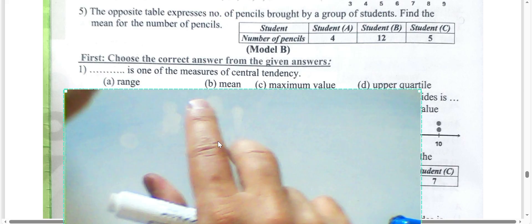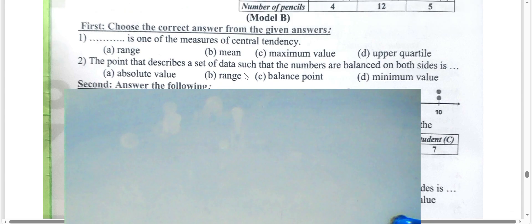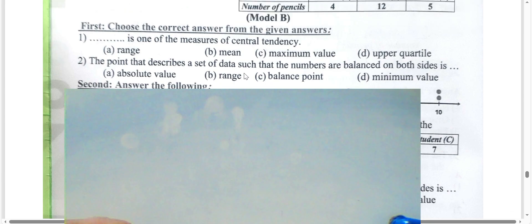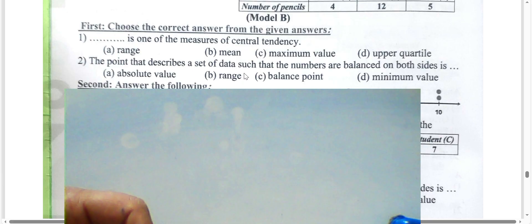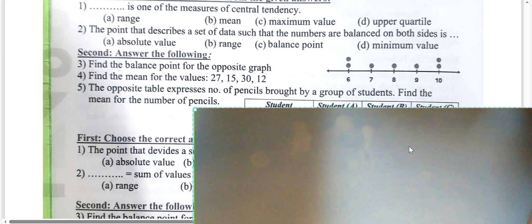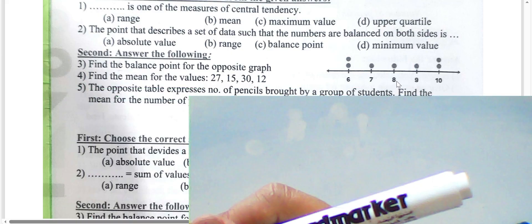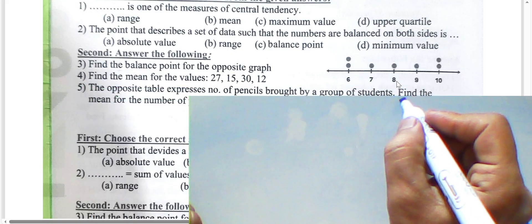The point that divides a set of data so that numbers are balanced on both sides is called the balance point — choose letter C. Find the balance point of this graph: the balance point is eight.